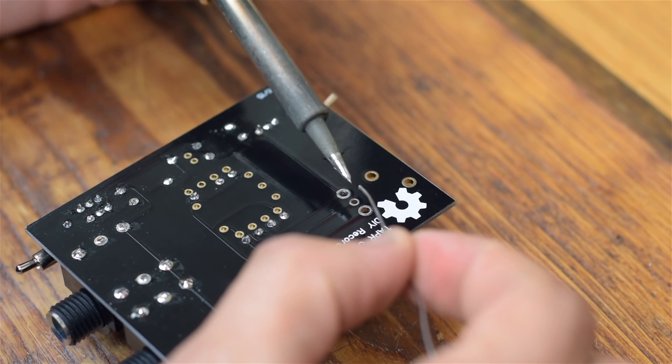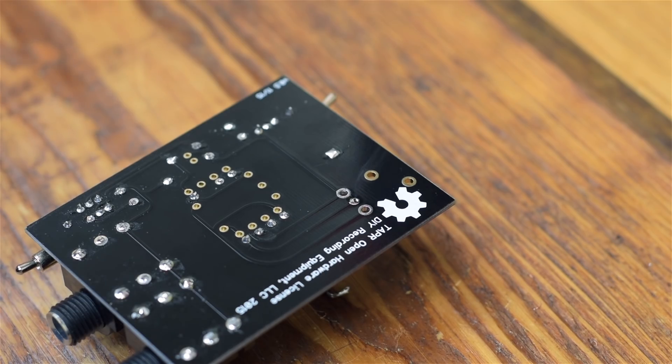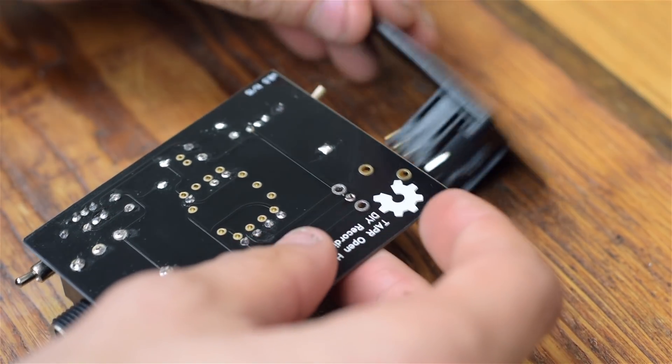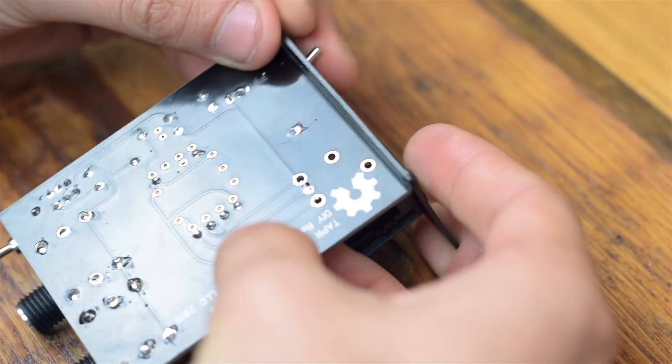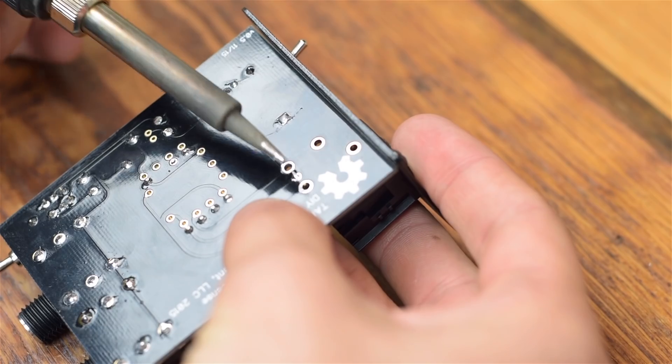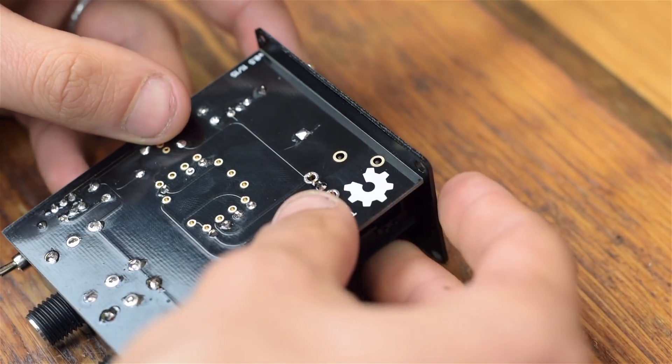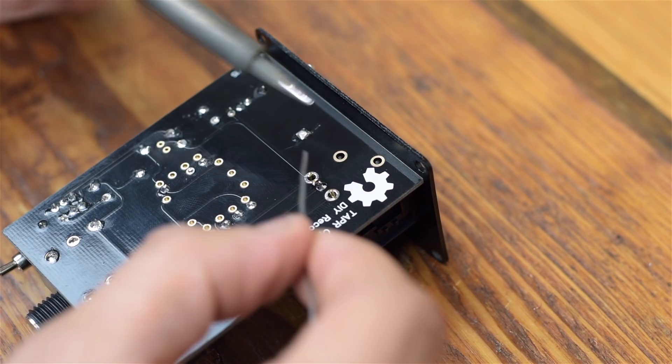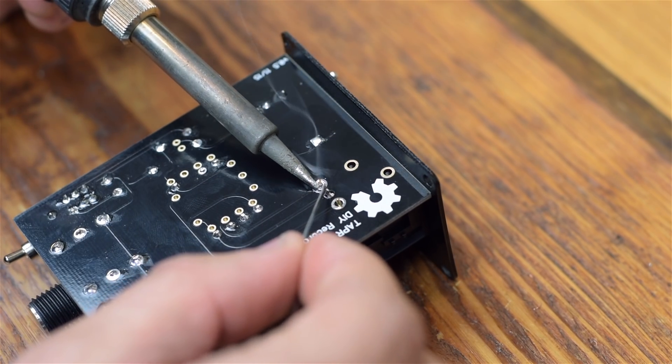Next we'll solder the XLR jack. It can be a little tricky to hold the jack in place while you're soldering. So first we'll fill the middle pad with a little bit of solder. Then place the XLR jack and push it through the PCB while you reheat that pad. Voila! The jack is perfectly in place. Now solder the other two pads. There's no need to trim these leads either.